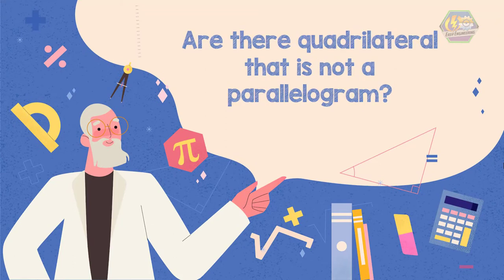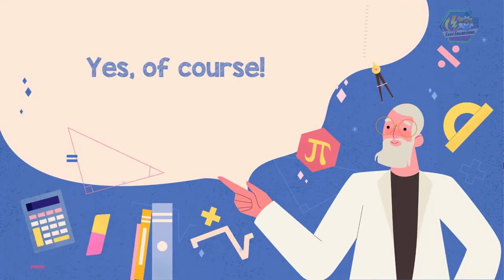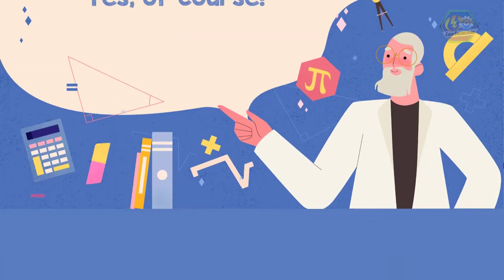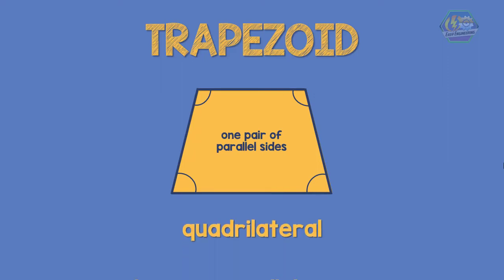Are there quadrilaterals that are not a parallelogram? Yes, of course. One example is the trapezoid. A trapezoid has four sides and four angles, but it only has one pair of parallel sides. Therefore it is a quadrilateral, but not a parallelogram.